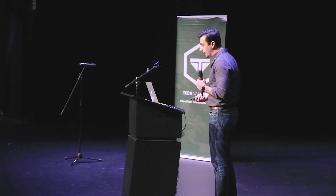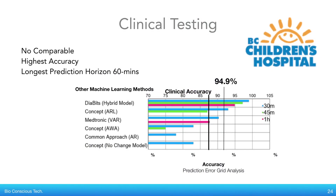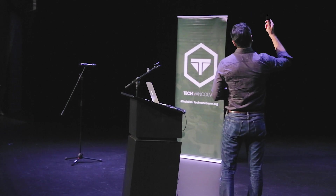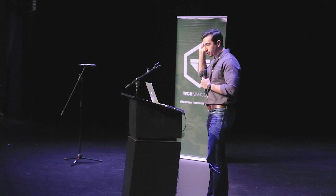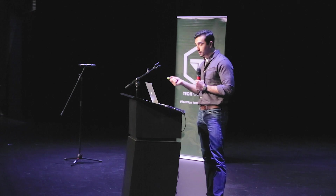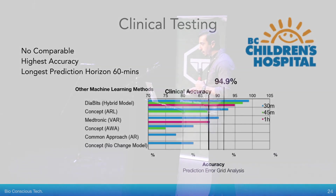We thought this was a pretty good idea. We went to BC Children's Hospital and said we have this compelling idea and we want to test it. And to our surprise, they actually let us test it with their patients. We found out that 90% accuracy is where we need to be. Even Medtronic and all the big companies couldn't really do it beyond 30 minutes, but we were able to achieve that level of accuracy — even higher — for 60 minutes, which is the pink line up top, which was extremely empowering from an entrepreneur's perspective.